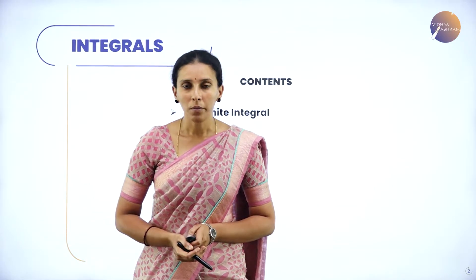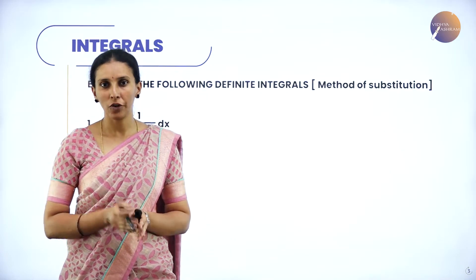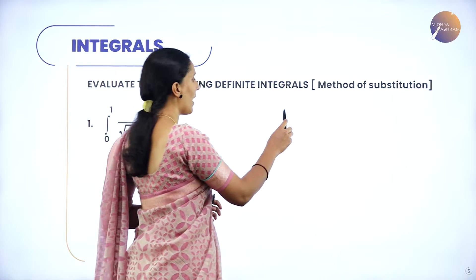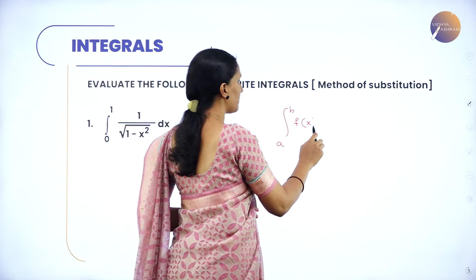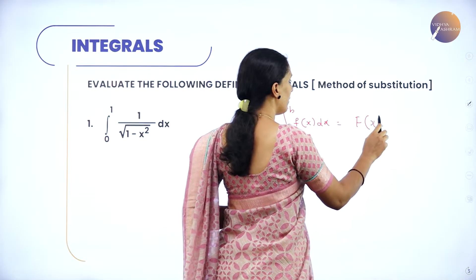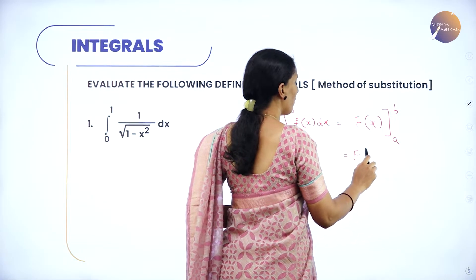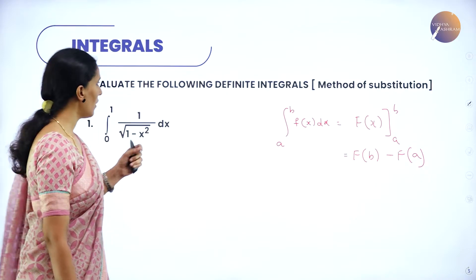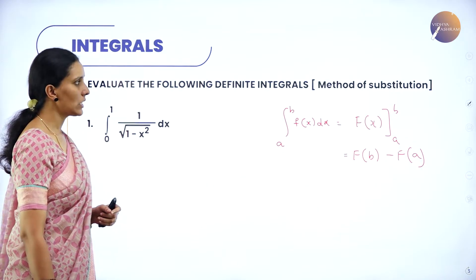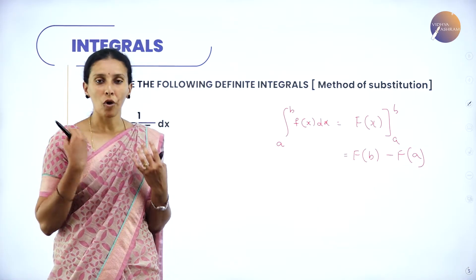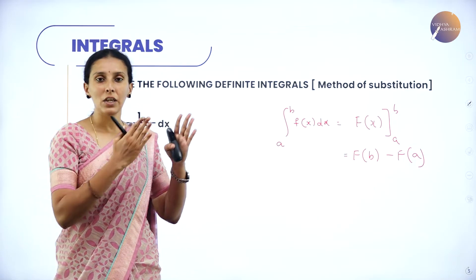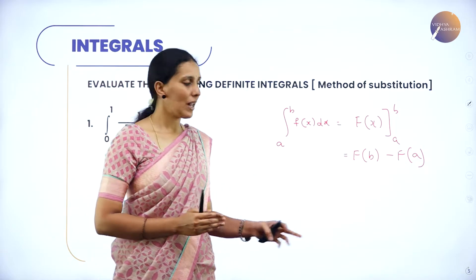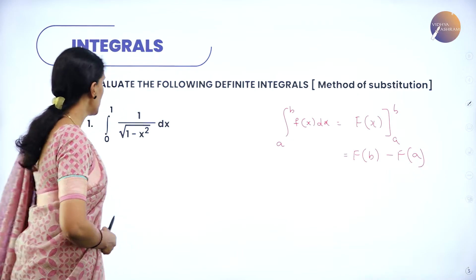Let us take a few more problems to find out the definite integrals using the concept of the second fundamental theorem of integral calculus. The second fundamental theorem states: suppose you have an integral from a to b of f(x) dx, then you find its antiderivative and apply the limits — find the value of the antiderivative at b and at a, then take the difference. This gives you the value of the definite integral. Here are a few problems using the method of substitution.